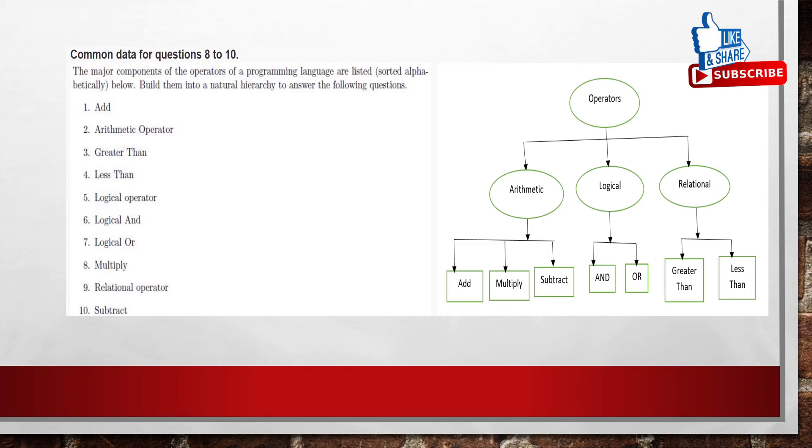Because they are given the components in an alphabetical order. But we need to construct it with a hierarchy. So you can construct the operator's hierarchy. Operators, in this we are having arithmetic, logic, relational. In this we are having options add, multiply, subtract and are greater than, less than. These are the options taken from the question only. I have not drawn by my own. Based on the question, I have created a natural hierarchy. So based on this hierarchy, we are going to answer the 8, 9, 10 questions.